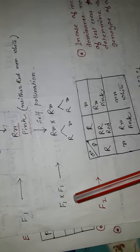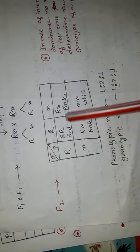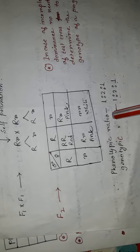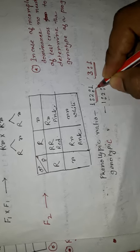In the second generation, after crossing between the F1 generation, in F2 generation, we find three types of plant: one is red color flower producing plant, two pink color flower producing plant, and one white color flower producing plant. So the phenotypic ratio here is 1:2:1, but in Mendel's monohybrid cross, this ratio was 3:1. So this ratio is deviated.